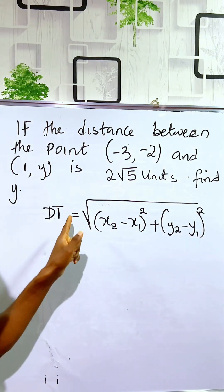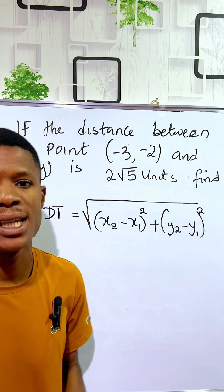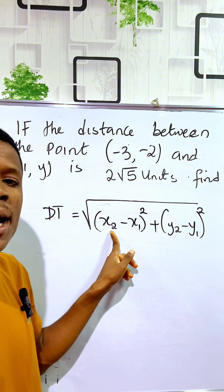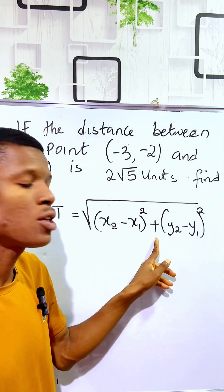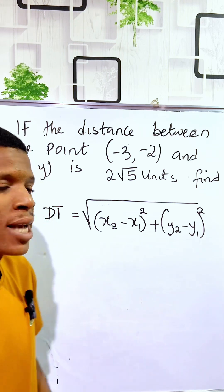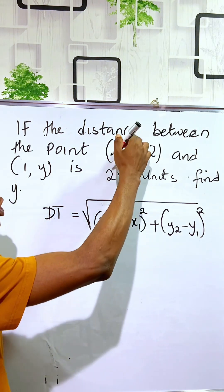The distance between two points can be calculated using this formula: the square root of (x2 minus x1) squared plus (y2 minus y1) squared. To get our x1 and x2, we go to the points.